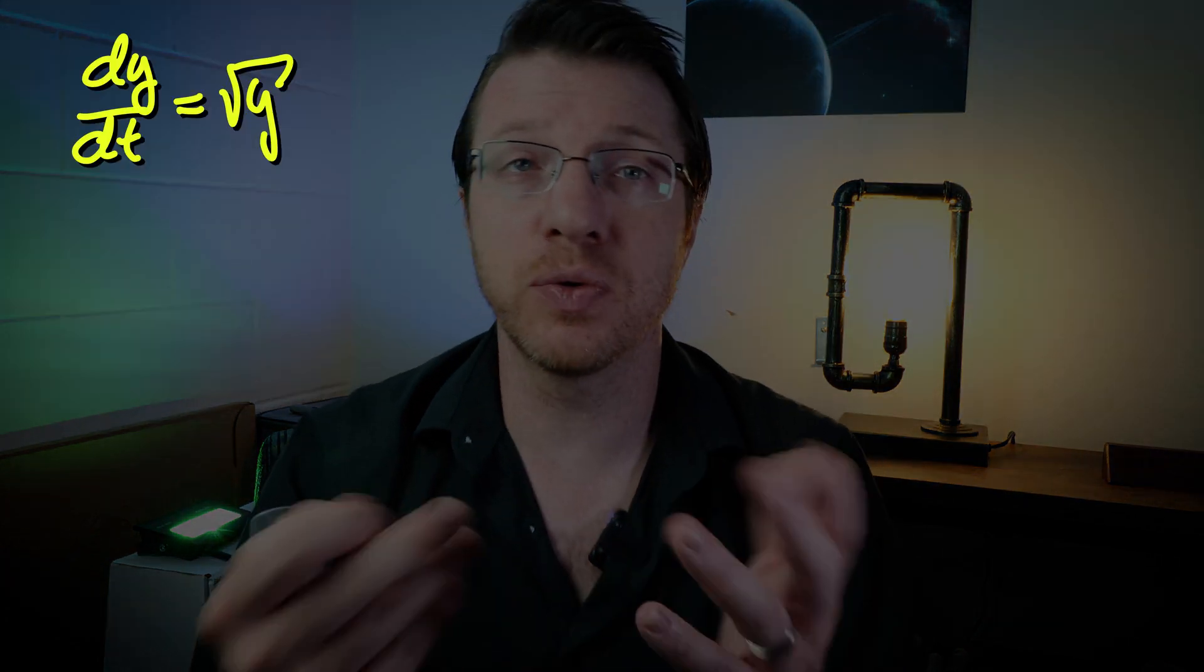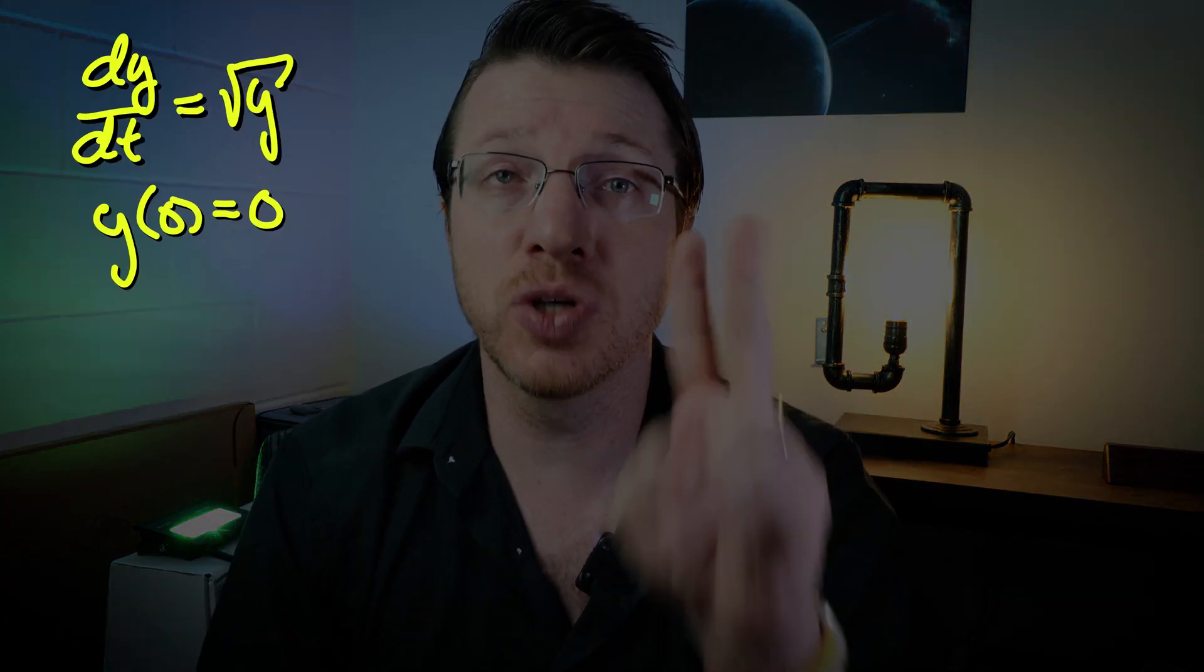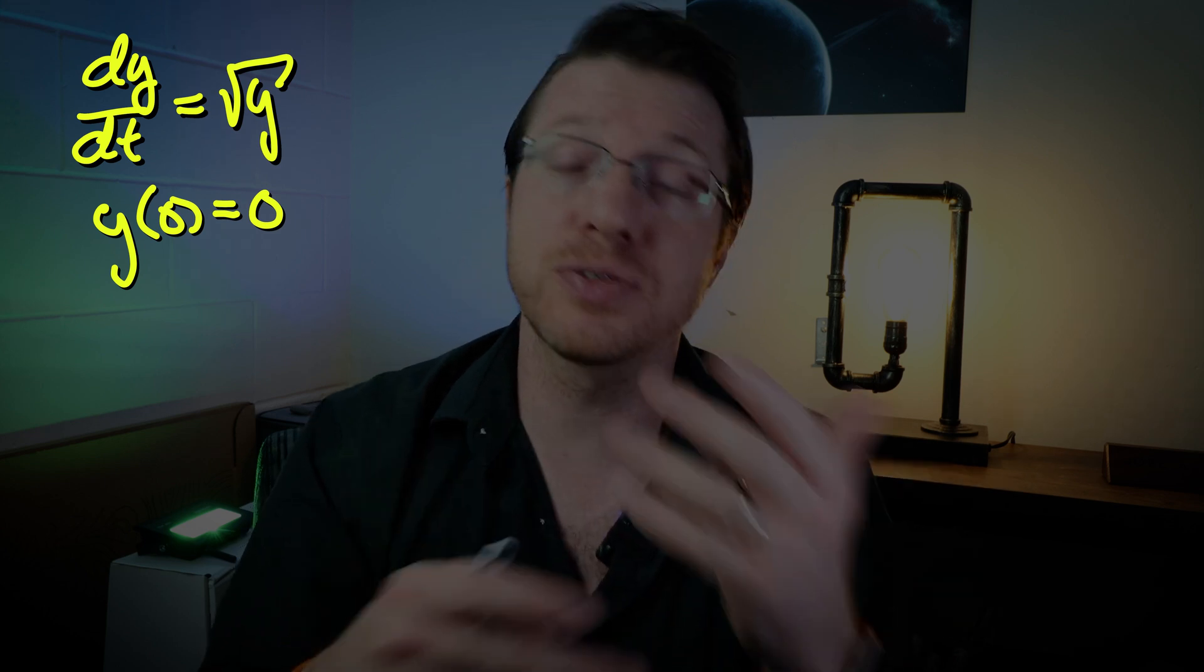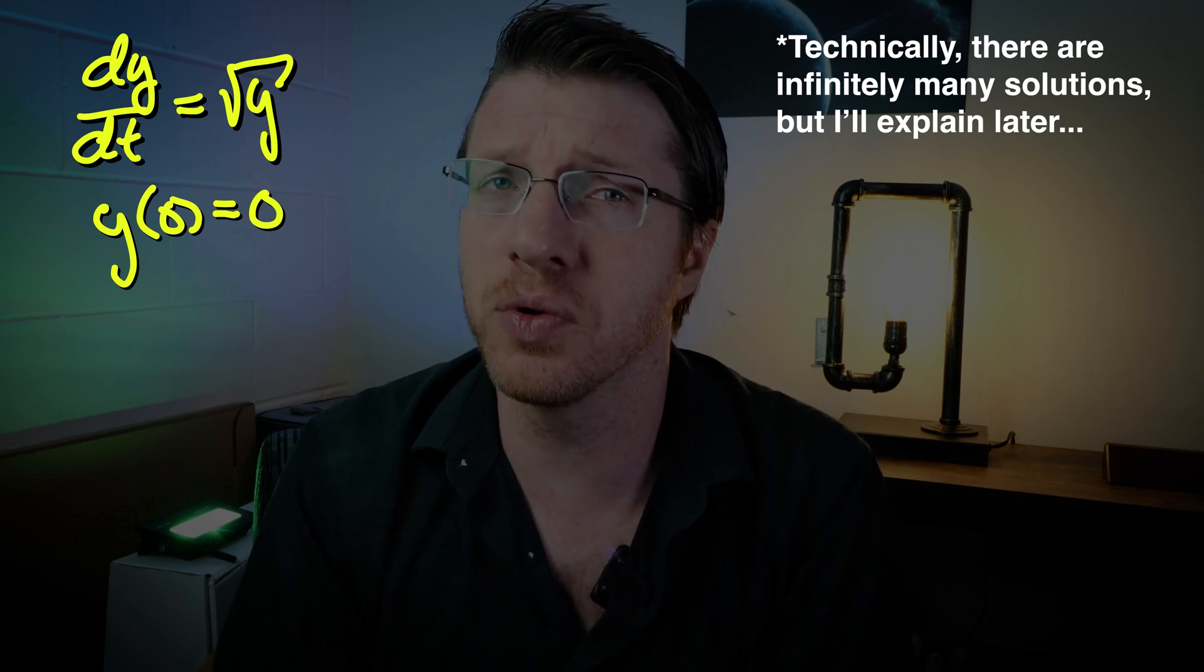So if we look at dy/dt equals the square root of y and y(0) is equal to 0, we actually have two solutions. Well, at least two solutions that I know of. And that happens because the square root of y is not actually differentiable at the origin.